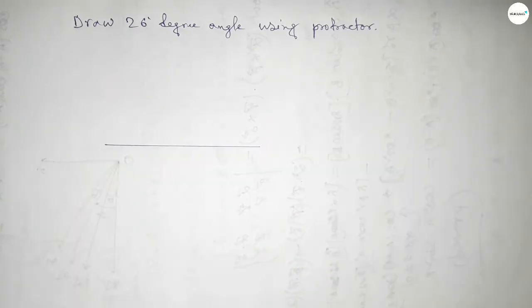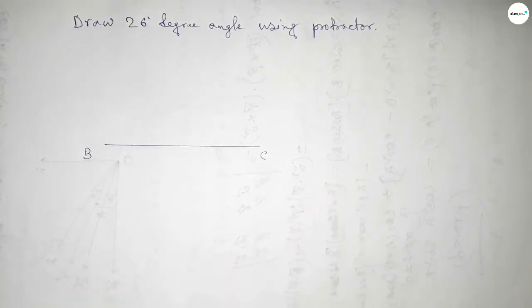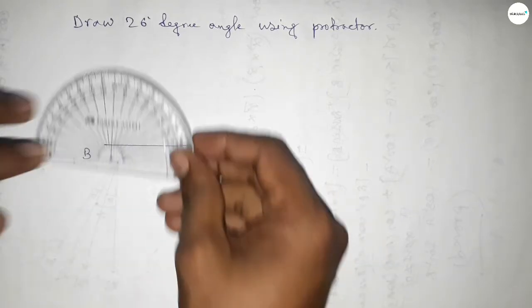First drawing here a line. Now taking here point B and here point C. Now putting the protractor on point B perfectly.